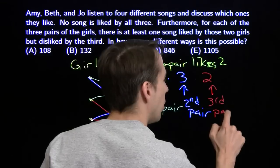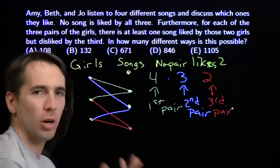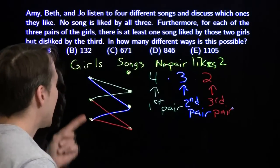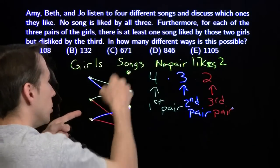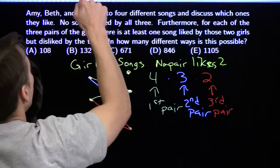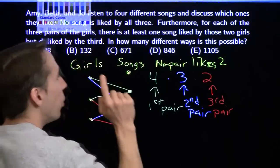Now what's going on with that last song? We know this last song can't be liked by two girls, can't be liked by all three girls either. It can be liked by just one girl, or it can be liked by no girls at all.